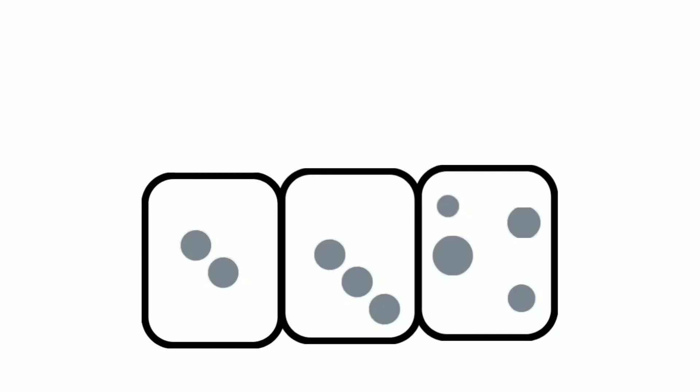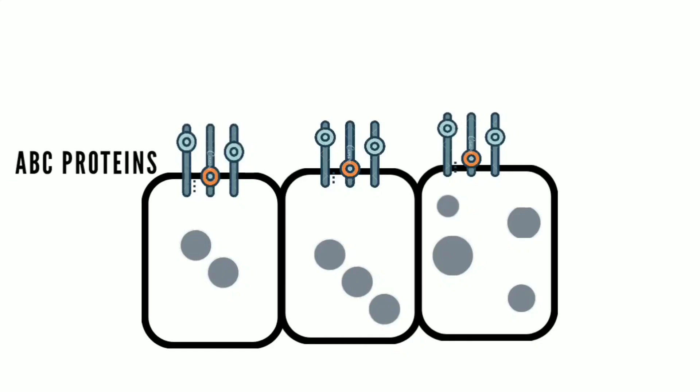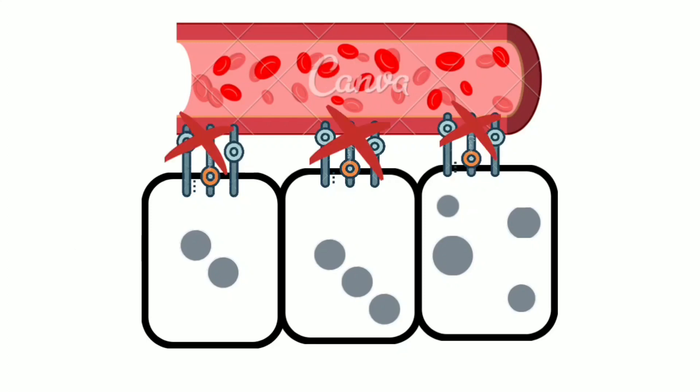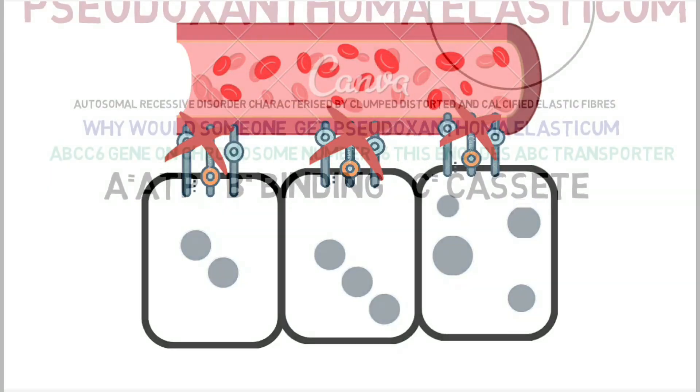These are the cells of the liver, and these are the normal ABC transport proteins attached to them. Under normal conditions, ATP and other mineralization inhibitors transport through this ABC transporter protein and enter the blood vessels — it binds ATP, hence it is called ATP-binding cassette transport protein. In pseudoxanthoma elasticum, due to the ABCC6 mutation, these transport proteins are mutated, so ATP remains inside the cells. ATP is a source of inorganic pyrophosphate.